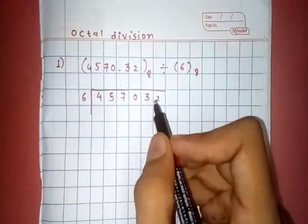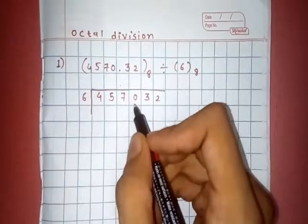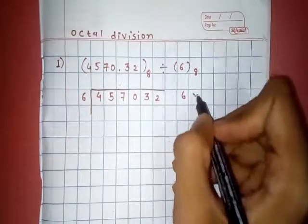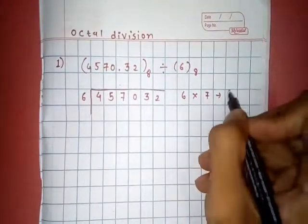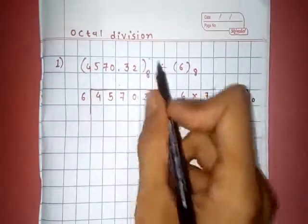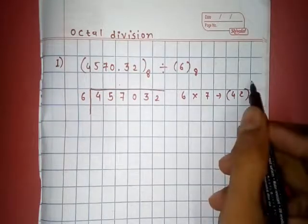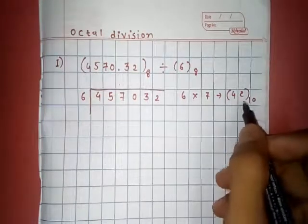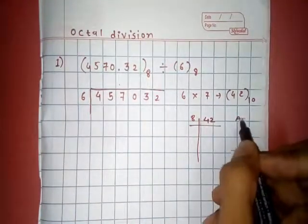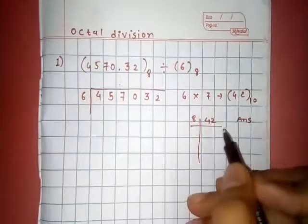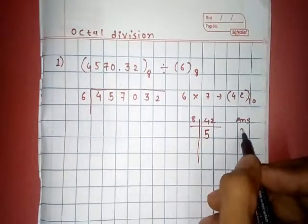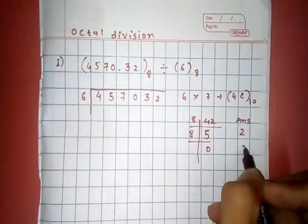In simple decimal division, 6 sevens are 42, but that is in decimal value. We want octal value, so we convert this 42 into octal. 42 divided by 8 gives us a remainder. 8 fives are 40, 42 minus 40 is 2. Written in opposite way, this is 52 in octal value.